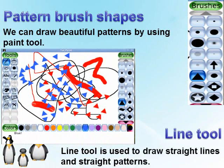Line Tool: The line tool is used to draw straight lines and straight patterns. It works quite similar to the paint tool and has the same brush shapes in the sub toolbox. The only difference between the paint tool and the line tool is the order in which the drawing is displayed. While using the paint tool, you can see the image which you are drawing at that moment. On the other hand, while using the line tool, you will see only a straight line from the starting point to the ending point.